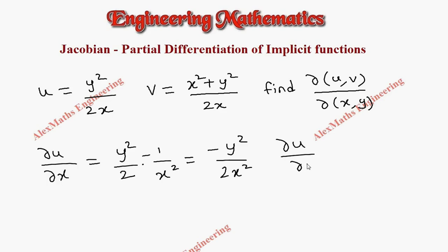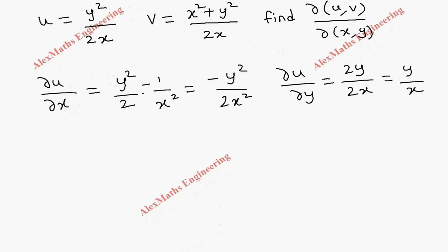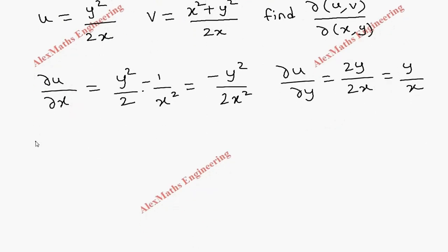For ∂u/∂y, y is varying so y² differentiates to 2y, and 2x is constant. After canceling the 2, we get y/x. Now for partial differentiation of v with respect to x, we have to follow the quotient rule.